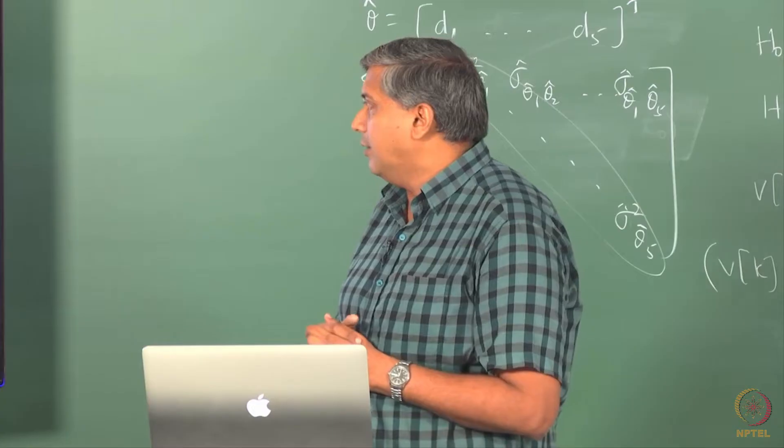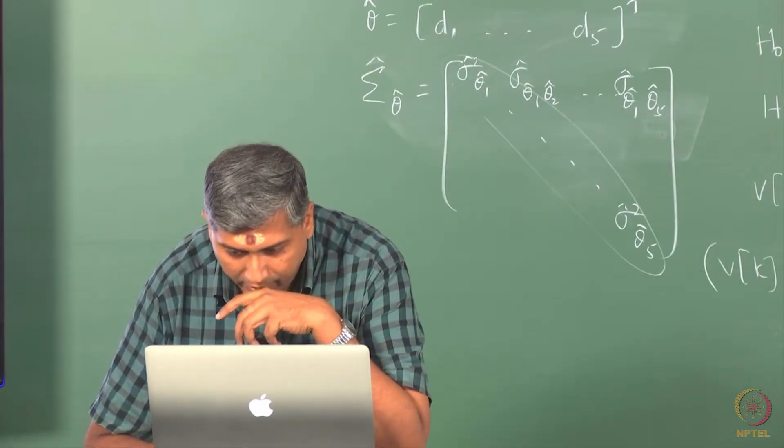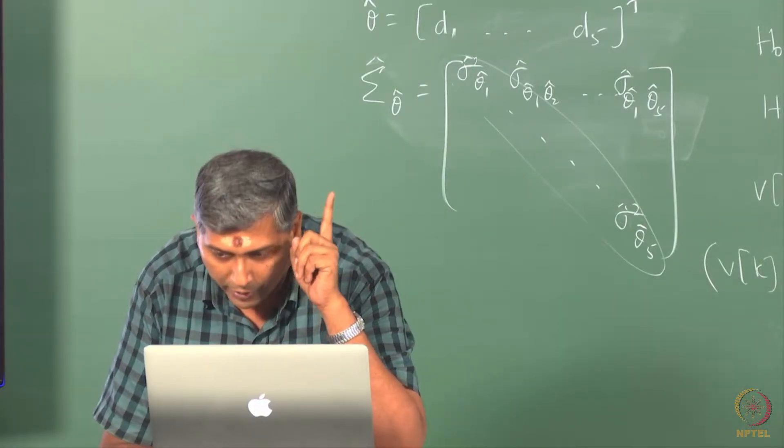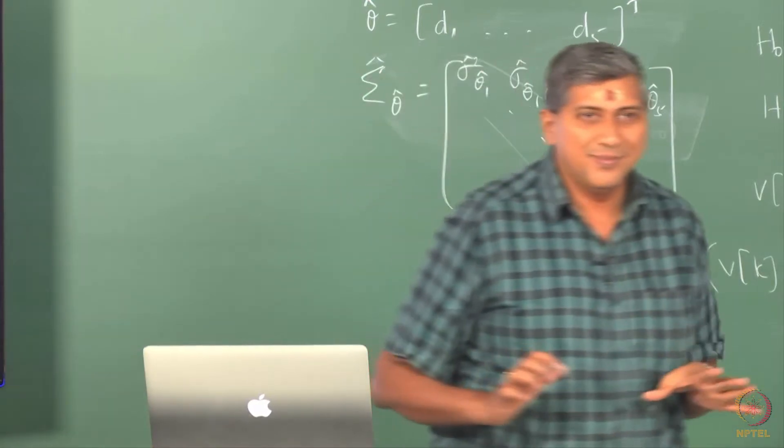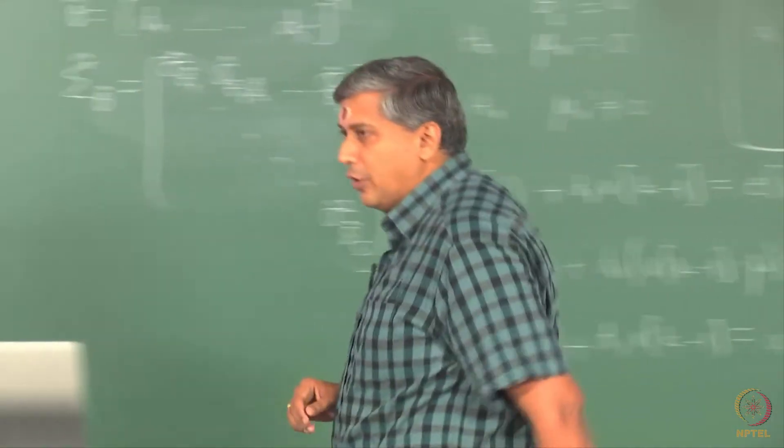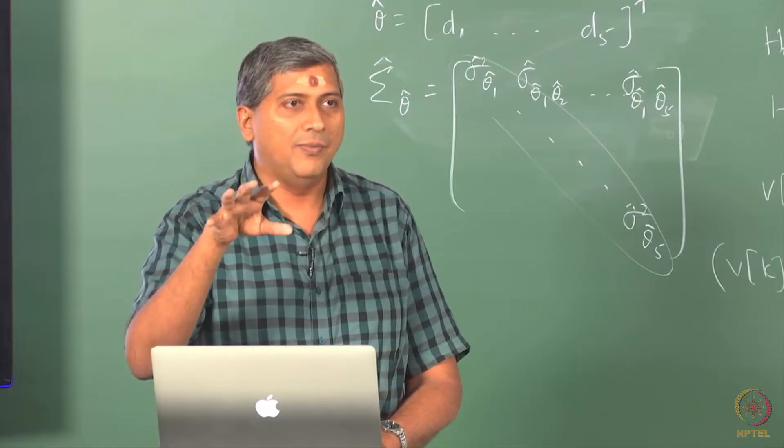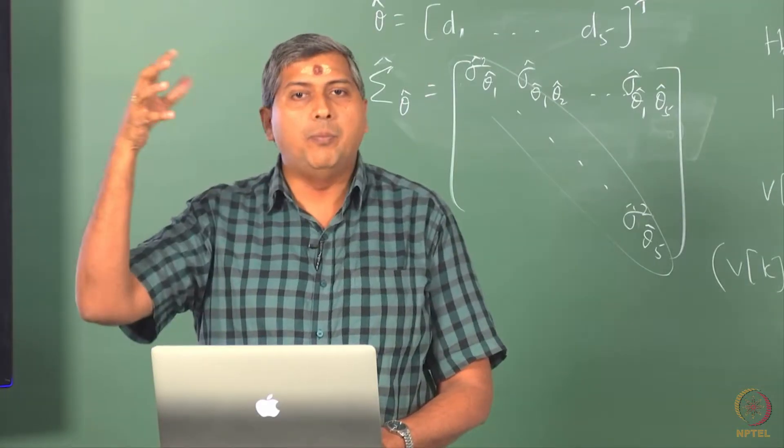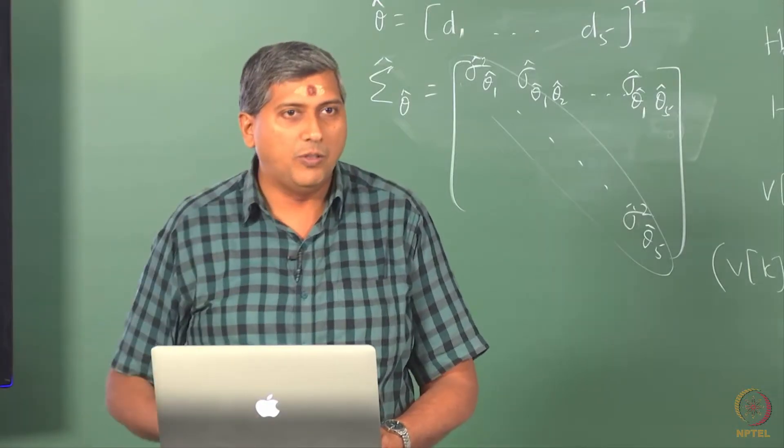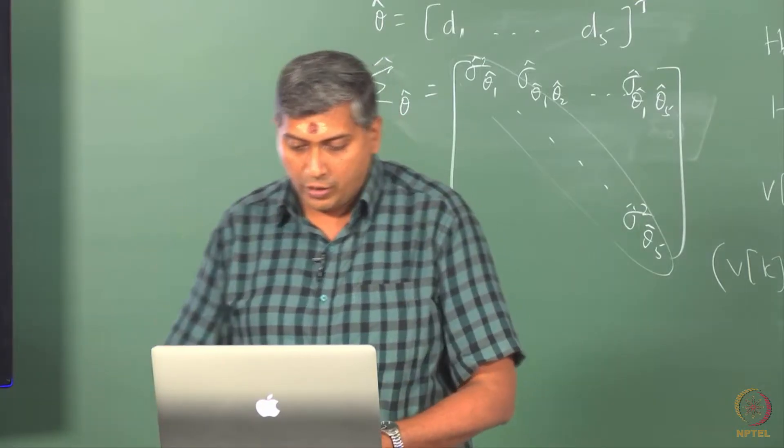This transform.parameters, if true, the AR parameters are transformed to give you stationarity. Essentially it is forcing some kind of stability on the model. It pulls back if it finds an AR model outside the unit circle, it kind of pulls back somehow and forces it, but let us not worry about it now.